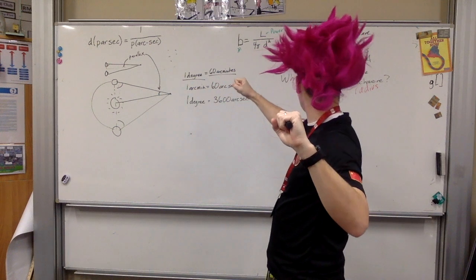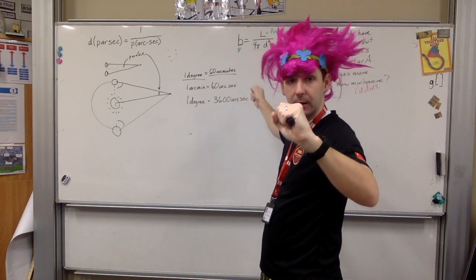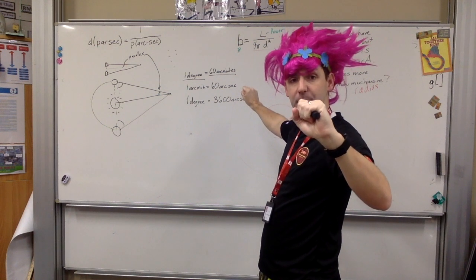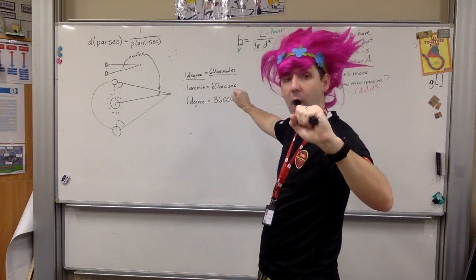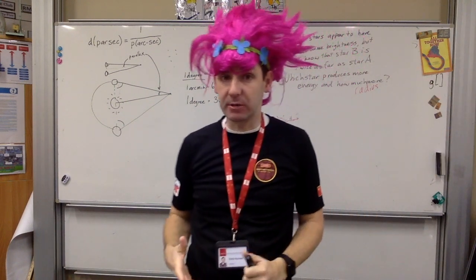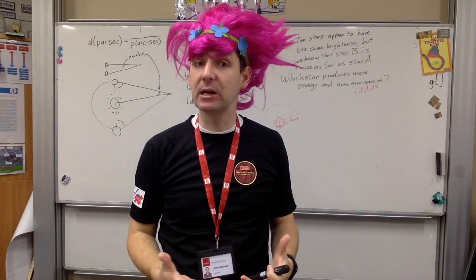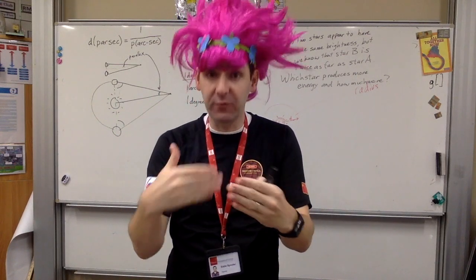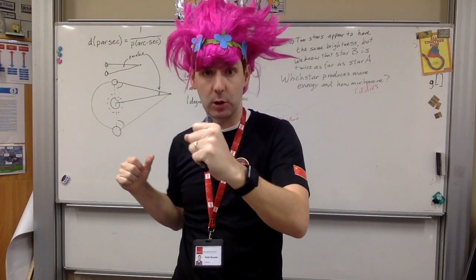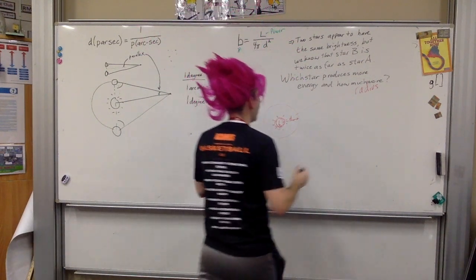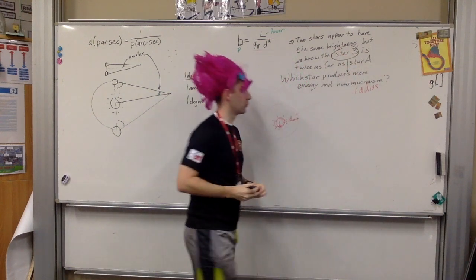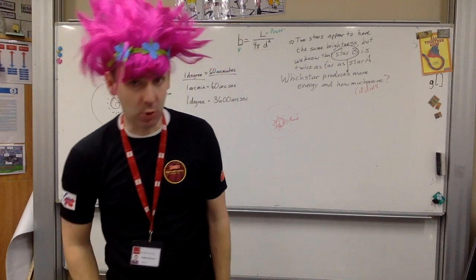If B is farther away, it says it's twice as far, my fist now looks smaller. So, it should be less bright. Why would it be brighter? Well, because it's putting out more energy. If it's putting out more energy, then as it goes over that distance and dims, it will dim to the same brightness as the closer one. So, we know right away that star B must produce more energy.